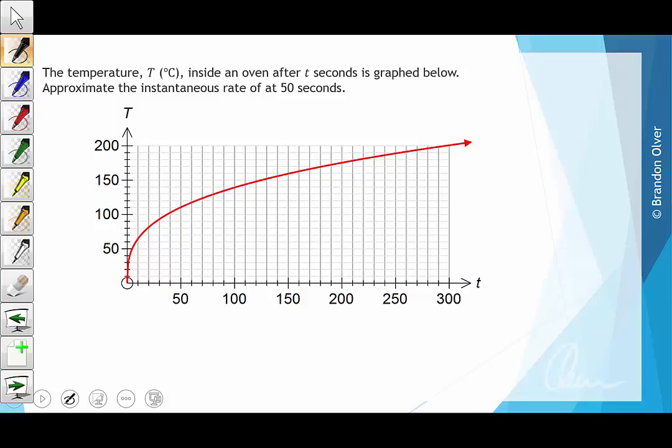The temperature T in degrees Celsius inside an oven after T seconds is graphed below. Approximate the instantaneous rate of change at 50 seconds.